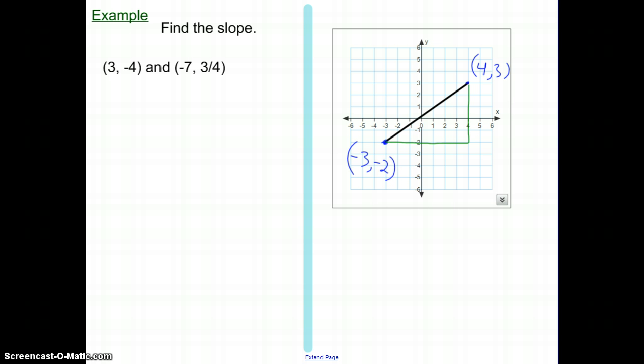For the horizontal part, we're going from an x value of negative three to an x value of four. That's seven. To go from a y value of negative two to a y value of three, you are going up five. So the slope, rise over run: we are rising five, running seven. There's our slope.